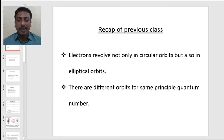So in the last session we have discussed that electrons not only revolve in the circular orbits but also in elliptical orbits according to both Bohr as well as Sommerfeld relativistic model. And there are different orbits for the same principle quantum number. You can have circular as well as elliptical orbits.